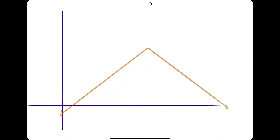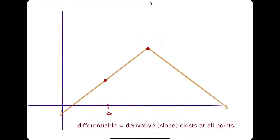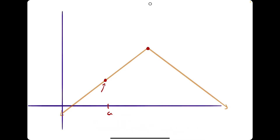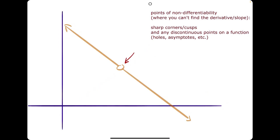There are some functions where you can't find the derivative at every single point. There might be one point on the function where you cannot find the slope — for example, at a sharp corner at the top. You could say that point has a positive slope, a negative slope, or a zero slope, but because it comes to this sharp point, there's really no way of telling exactly what the slope value is. In other words, we cannot find the derivative — the derivative does not exist. Therefore, it's what we call non-differentiable. To be differentiable means that the derivative exists at all points. Sharp corners are one example of non-differentiability. Also, if a function has any hole or other discontinuity, the function will not be differentiable at that discontinuous point.